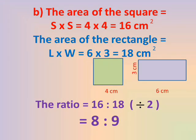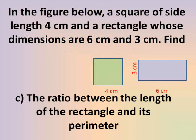The ratio between the area of the square to the area of the rectangle is 16 to 18 — the same ratio as before. We divide both terms by 2: 16 ÷ 2 = 8 and 18 ÷ 2 = 9, giving us 8 to 9.